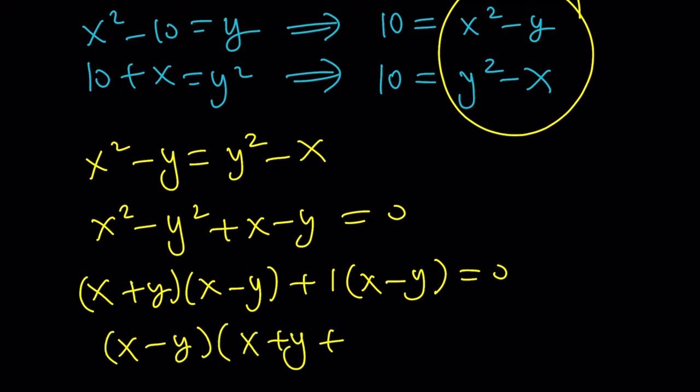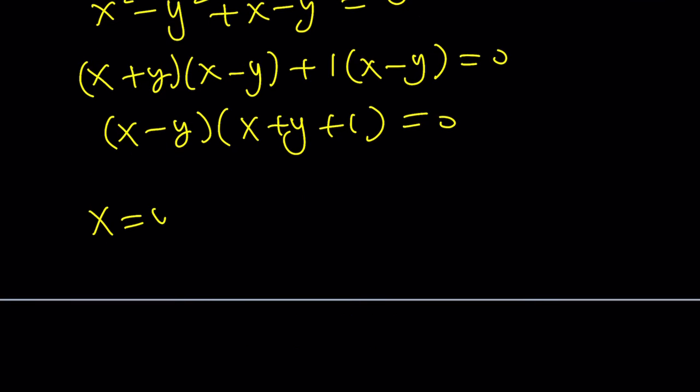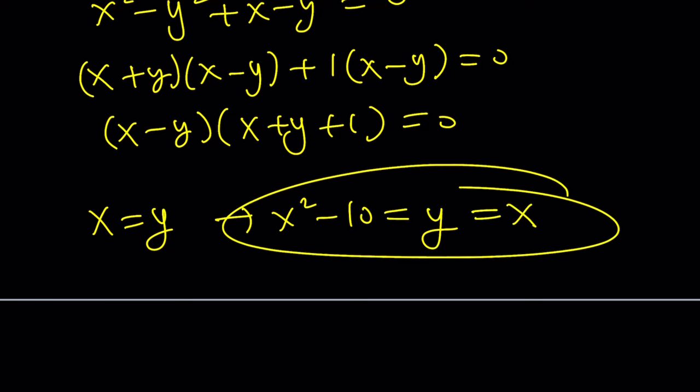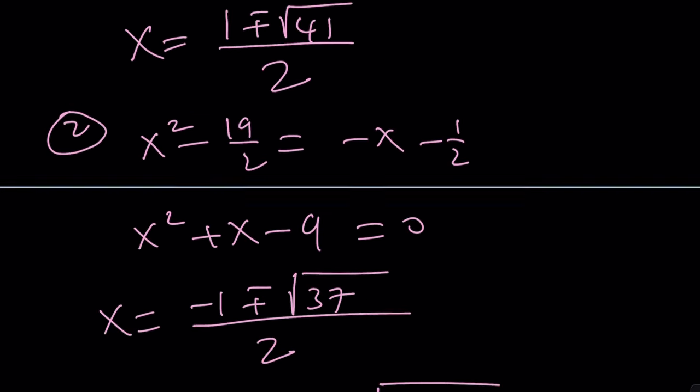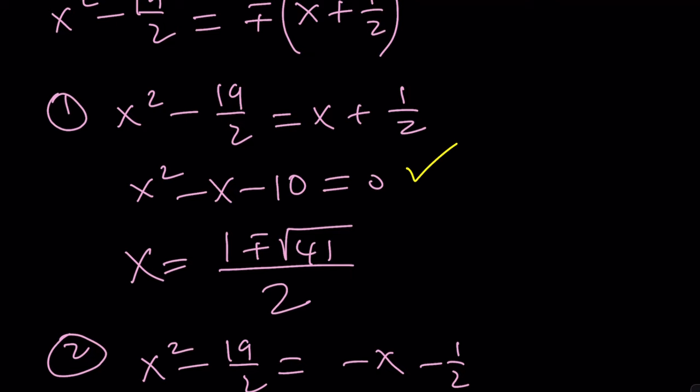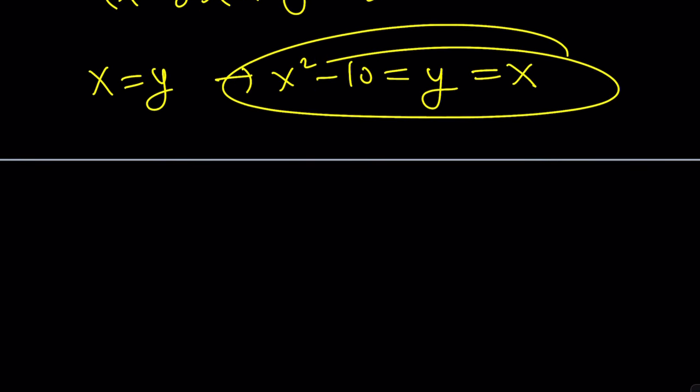Now this is factorable. One of them comes from x equals y. And if you plug it in, you'll get the same thing. Replace this y with x. That will give you this one. And if you do the other thing, you'll get the other one.